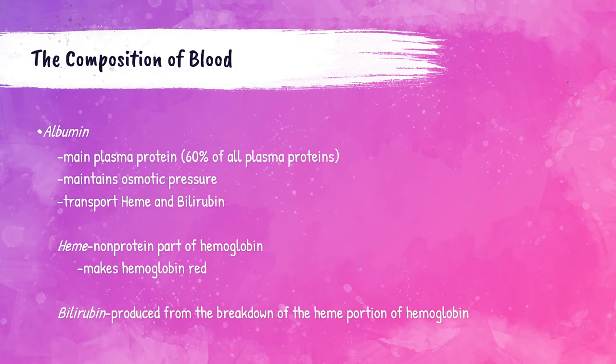We discussed what plasma is and some of its contents. One of those was proteins. The main protein type in the plasma is called albumin — we'll be discussing albumin a lot in the clinical chemistry courses, but we'll discuss it briefly here. Albumin accounts for about 60 percent of the total amount of proteins within the plasma.